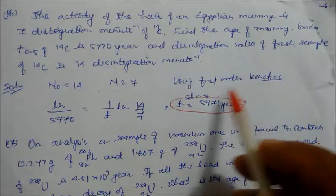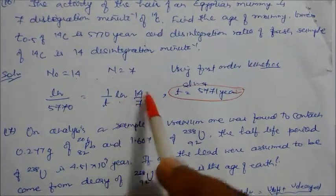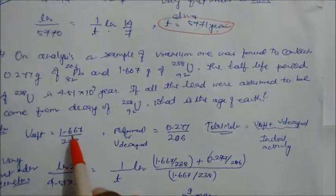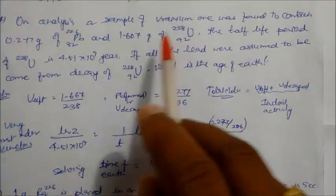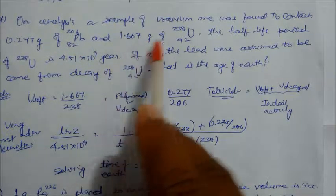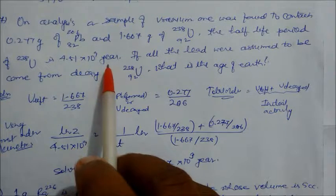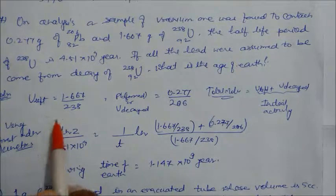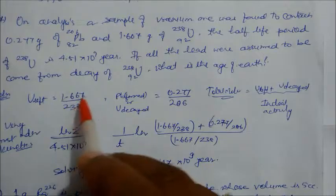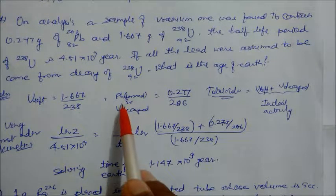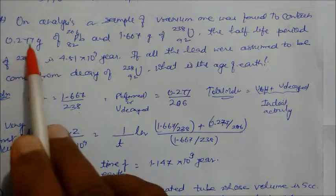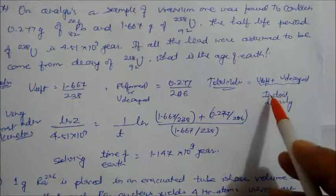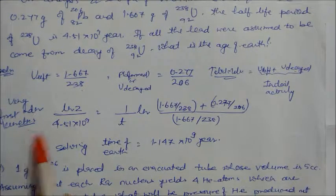Problem 17: On analysis, a sample of uranium ore contains 1.677 grams of uranium and a corresponding amount of lead-206. Half-life of uranium is 4.51×10⁹ years. Assuming all lead came from decay of U-238, find the age of the earth. Uranium left = 1.677/238 moles. Lead formed gives uranium decayed in moles. Total initial = uranium left + uranium decayed. Using first order kinetics, the time of the earth is calculated to be approximately 10⁹ years.